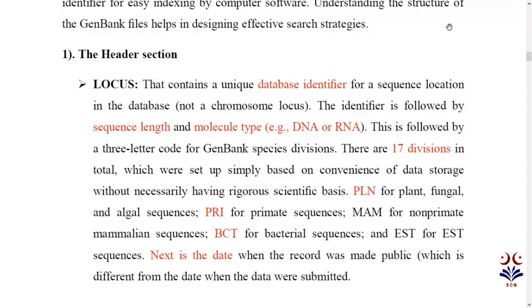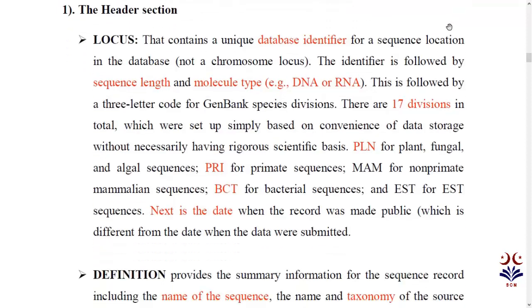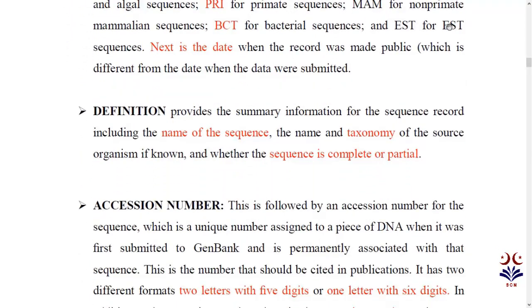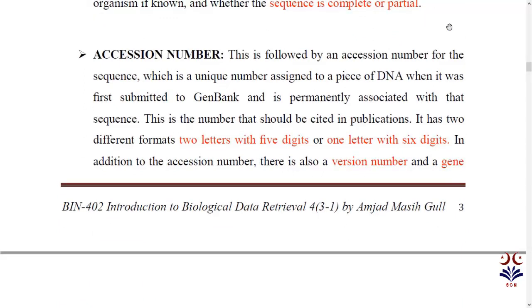After the molecular type, there is a date. Then there is the name of the sequence which we have searched for. After that, there is a taxonomy field. After that, whether the sequence is complete or partial. Then the header has the accession number. If a researcher has published a sequence, it is assigned an accession number. The accession number is two letters and five digits, or one letter and six digits.